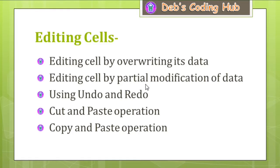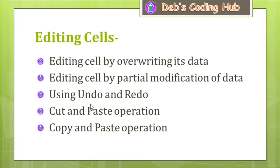There are two main ways to edit a cell. First, editing a cell by overwriting its data — we can directly overwrite the data stored in a cell. Second, editing a cell by partial modification — that means we are not deleting the entire contents of the cell, but modifying only some part of it.